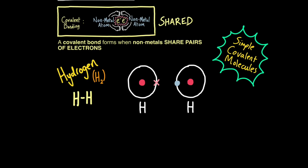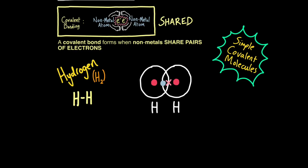Hydrogen has one electron in its outer shell and needs just one more, since the first shell is complete with two electrons. So the two hydrogen atoms share electrons like this — this pair of electrons counts for both of them, so each hydrogen atom has two electrons and a complete outer shell. Hydrogens share one pair of electrons. You can also write it with a capital H and a single line to represent the single bond that they share.